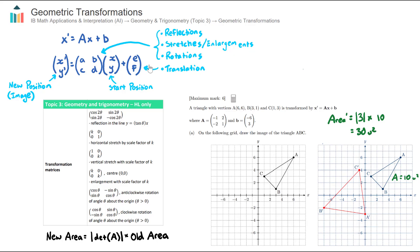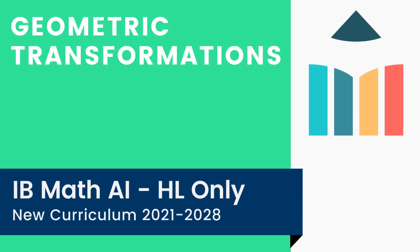That was a quick introduction to geometric transformations. We covered what a geometric transformation is, the general form including transformation matrix A and translation vector B, the four types of transformations, and how to find the area of the image given the area of the starting shape. I recommend practicing these questions in the question bank. Good luck.